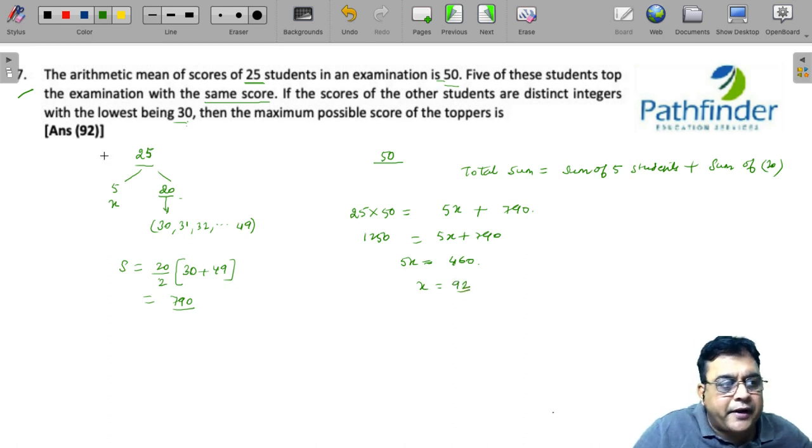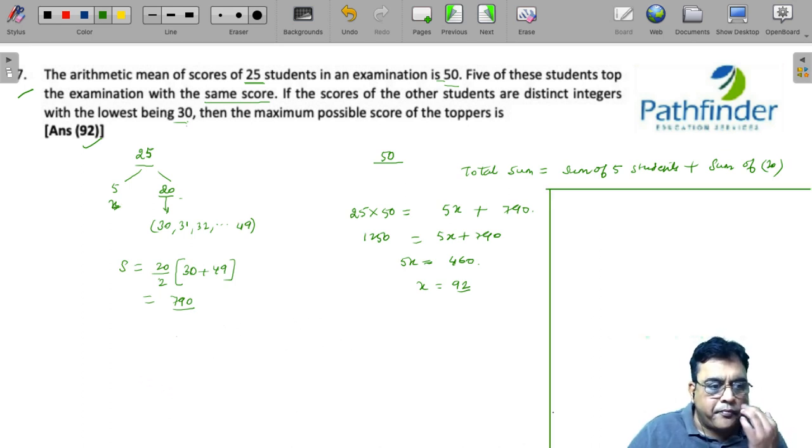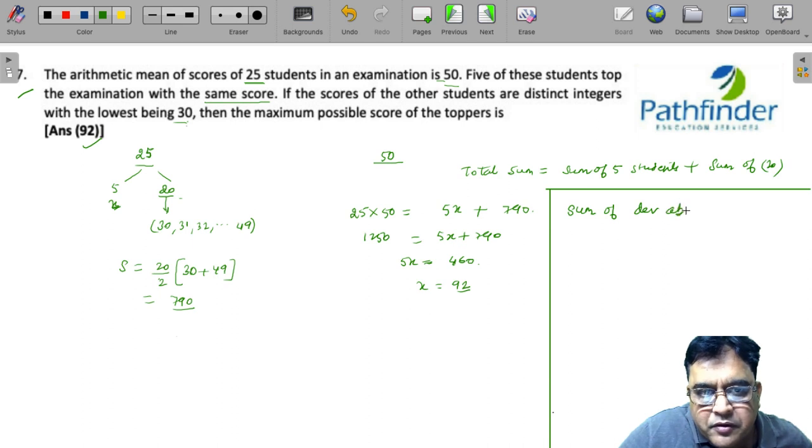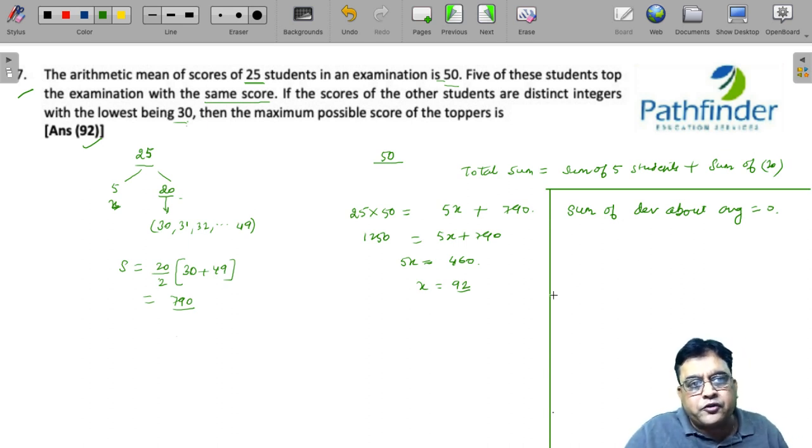Is there any alternate method of solving this? Yes, there is a beautiful alternate method of solving this. If you know that sum of the deviation about the average is 0, what is deviation? Deviation is nothing but score minus the average.